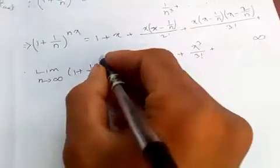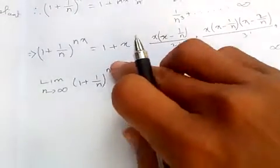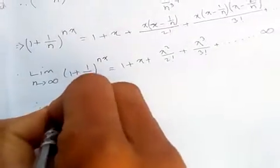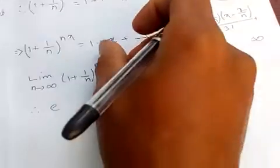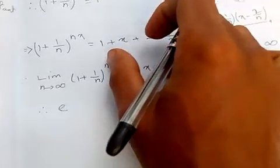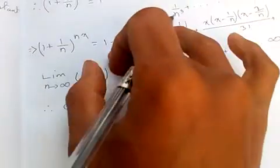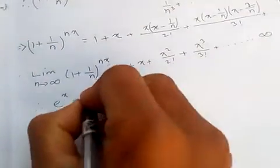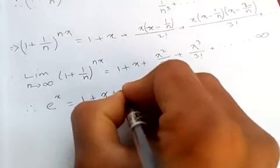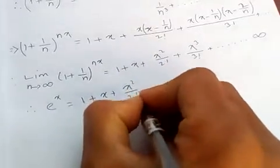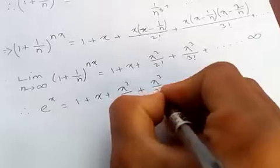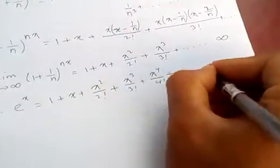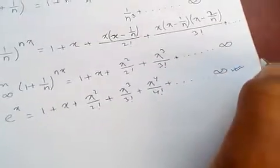Now, as I proved previously, the limit of 1 plus 1 over n to the power n is e. So this whole expression is e to the power x, which equals 1 plus x plus x squared by 2 factorial plus x cubed by 3 factorial plus x to the 4 by 4 factorial plus and so on to infinity. This is the proof.